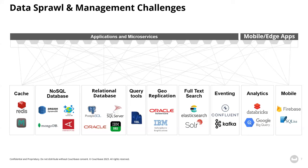There's data duplicated across the enterprise in different tools and the pipelines between them. For each of these, you need to learn a different SDK, and you have to patch, upgrade, scale, manage, and license each of these tools and the SDKs and the pipelines between them — all those lines between the different tools in your applications.